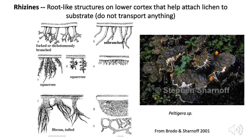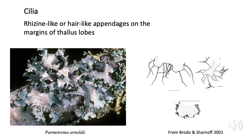Rhizines are root-like structures attached to the lower cortex of a lichen, typically a foliose lichen. They are not, however, actually roots like plants have — they do not transport anything. Lichens get all their water and nutrients from the air and absorb it through the cortex. Rhizines are similar to roots only in that they anchor the lichen to its substrate. Rhizines can have different branching patterns — unbranched, forked, or squarrose — which you can usually observe with a hand lens or microscope. Similar to rhizines but growing from the margins of the lichen or around the edge of the apothecium are cilia — little hair-like projections, pretty distinctive to some common lichens like Parmotrema.